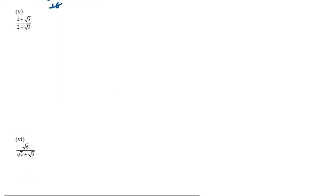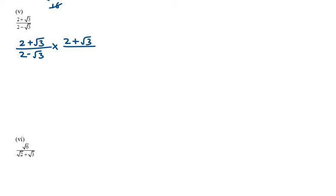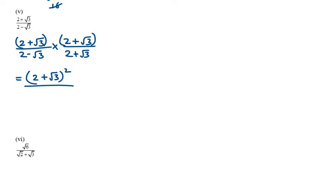Let's move on to the 5th part, which is again very easy. We have 2 plus under root 3 over 2 minus under root 3. You need to look at the sign of the denominator and multiply and divide by its opposite sign. So we multiply by 2 plus under root 3. In the numerator we have two same numbers, so the identity a plus b whole square applies. In the denominator, since there is one minus and one plus, the identity a minus b times a plus b, which is a square minus b square, applies.